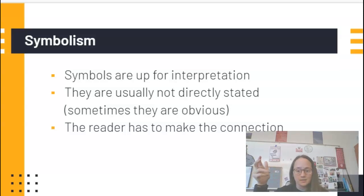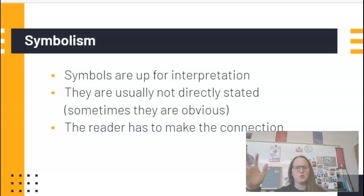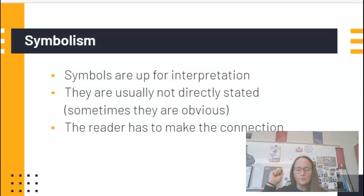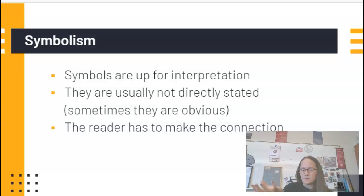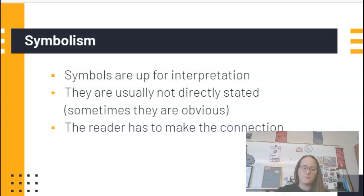For instance, in The Scarlet Ibis, which you've read, there's super obvious symbolism. The reader has to make this connection with symbols — the reader needs to see an object the author has gone into a ton of detail about and recognize it must be symbolic, then find proof to support that interpretation.